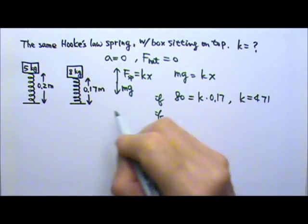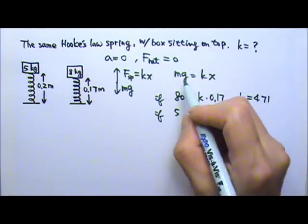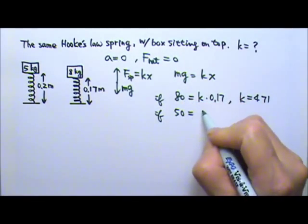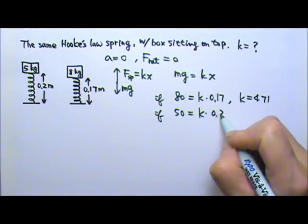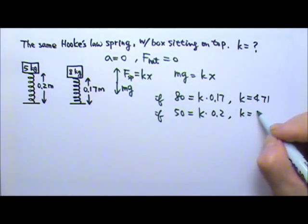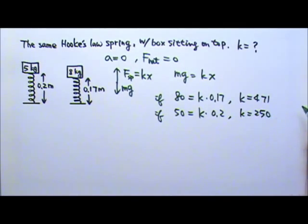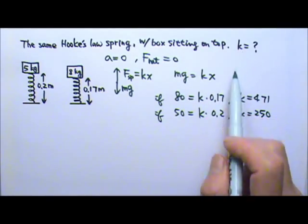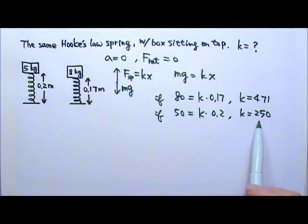But if I use that box, I'm going to have mg that's 50, that's k times 0.2, and this one gives me the k equals 250. But that's the same spring, so the k should not be different. So what do you think went wrong?